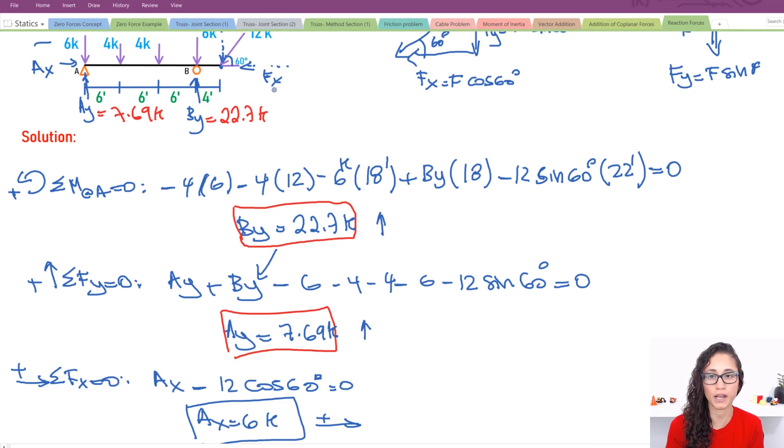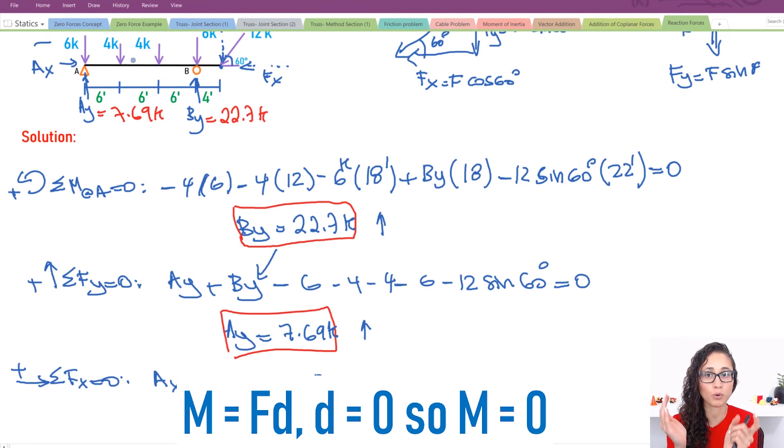Now, also, I would like to point out that note guys here that Fx, we didn't use it when we took the moment at A, because again, it's going through the reaction. So there's no really moment arm. Moment arm is zero.